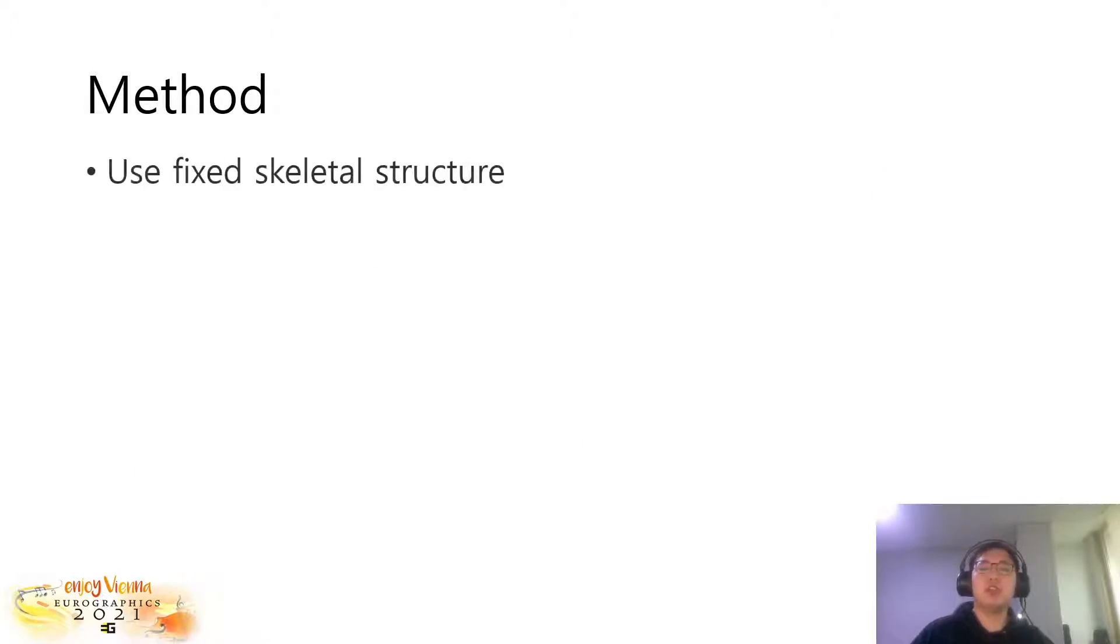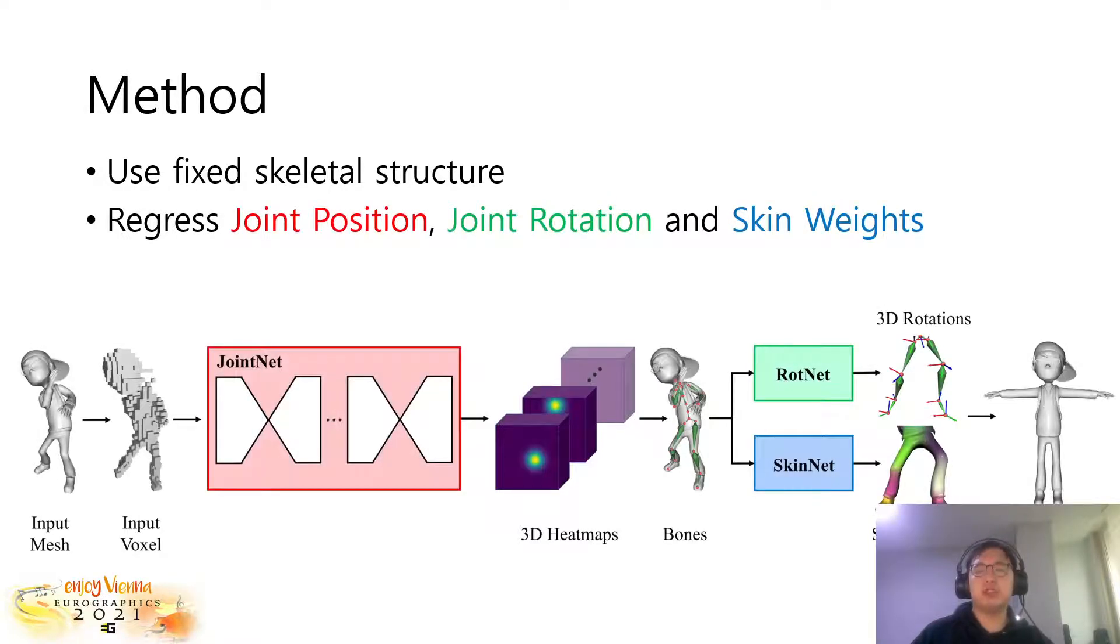To solve our problem, we use a fixed skeletal structure with 22 joints. Our pipeline comprises three modules: JointNet, RodNet, and SkinNet, where each module regresses the joint position, joint rotation, and the skin weights for our input mesh. Below is the overview of our pipeline.